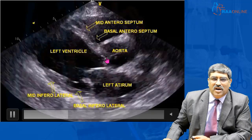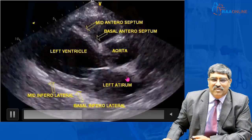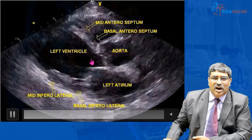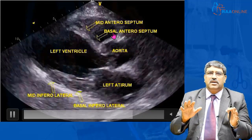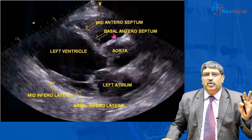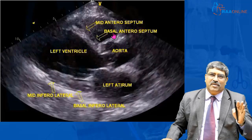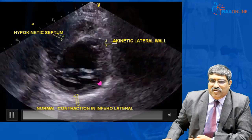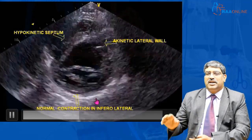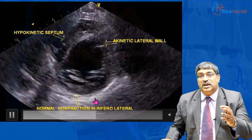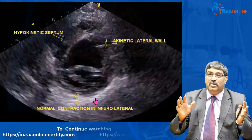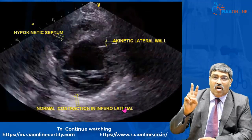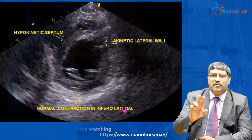In the parasternal long axis view, you can see the right ventricle, septum, left ventricle, aorta with the aortic valve, mitral valve, and left atrium. You can measure the left atrium-to-aortic ratio and assess all chambers. In the short axis view, you can see the lateral wall, inferolateral wall, septal wall, and anterior wall. All four walls may show different motion — one hypokinetic, one akinetic, another normally moving. At minimum, all non-cardiac anesthesiologists should be aware of these two views.